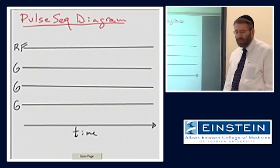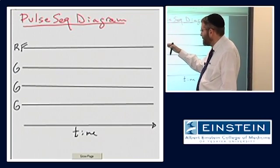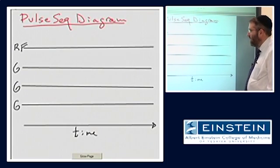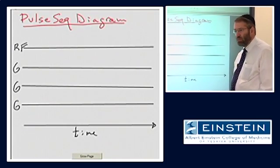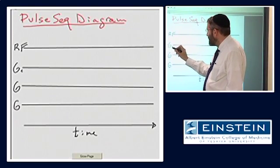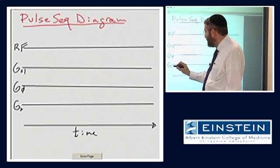And these lines are showing us what is going on with three different components of the MR system. The top line is the RF, and the next three lines are the gradient magnetic field. Now, rather than label these as X, Y, or Z, I'm going to label these as slice, phase, and frequency.